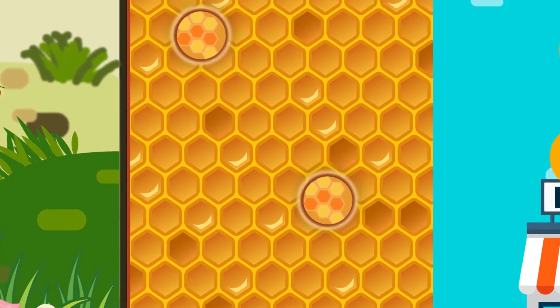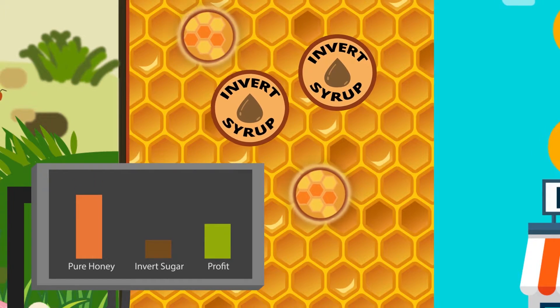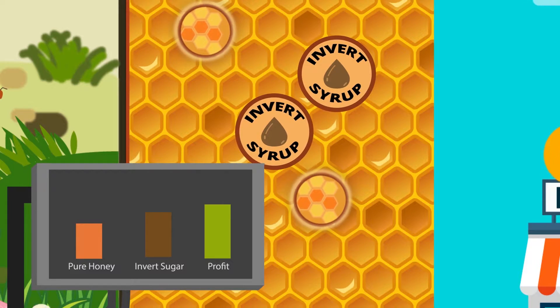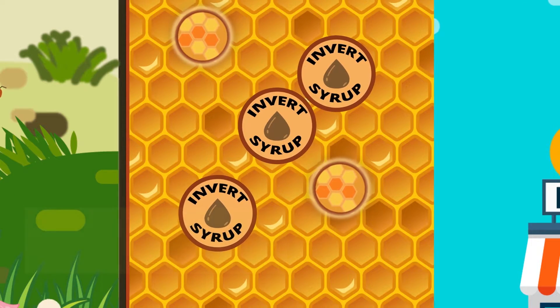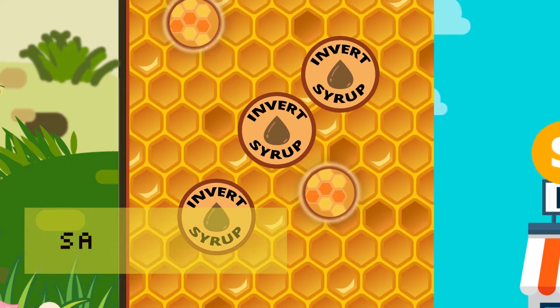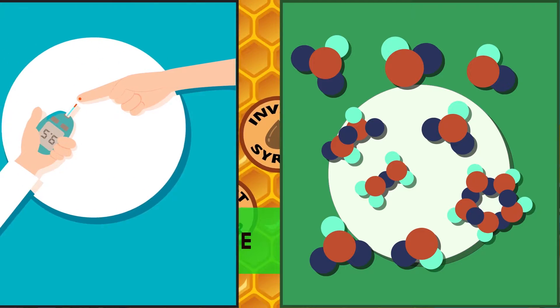However, to be able to get more profit from this, some manufacturers add corn syrups, invert sugars, and or beet syrups. Although these are not harmful substances, this will alter the health benefits of honey, such as its antioxidant content and glycemic index.